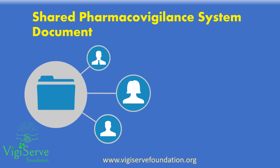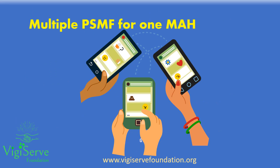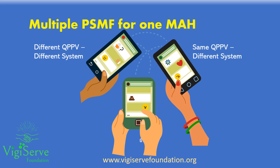Companies may consider sharing of the pharmacovigilance document. We can have multiple marketing authorization holders having a common document, which will mean a common pharmacovigilance system and the QPPV. This is more common across company affiliates or subsidiaries. However, please remember that the quality management systems in these companies may still be different. It is acceptable for the MAH to maintain multiple PSMFs, with different QPPVs or the same QPPV for different systems. The MAH can even consider a separate PSMF for a particular product. Generic companies may prefer a single pharmacovigilance system document or a single QPPV, while larger pharma companies may consider a hybrid system.